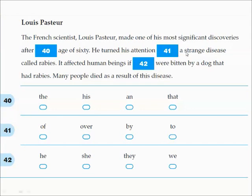But the answers are online too, so you can check that. And again, 'He turned his attention' something 'a strange disease.' He turned his attention of a strange disease, over a strange disease, by a strange disease, or to a strange disease—which I think is the correct answer—called rabies. So for each one, you're going through and seeing which of those options would sit best in that sentence.